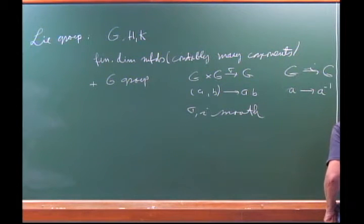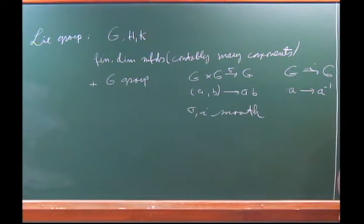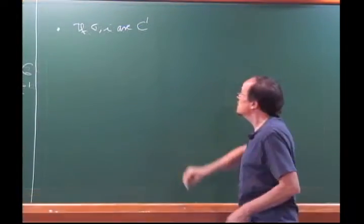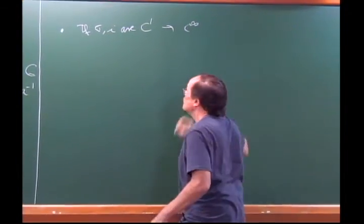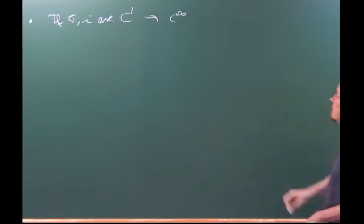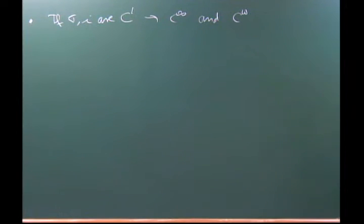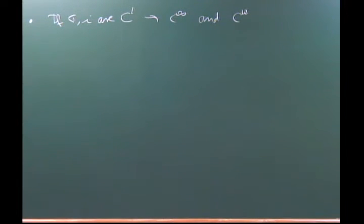Let me list a couple of amazing properties. The first one: if I only assume that multiplication and inverse are C¹, this implies the group is C-infinity — and in fact analytic. The manifold has some analytic atlas, and with respect to that atlas, multiplication is analytic. So C¹ implies analytic — kind of amazing — the first instance showing how powerful the combination is.